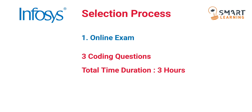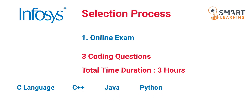In the first round, the allowed programming languages are: first one is C language, second one is C++, third one is Java, fourth one is Python, fifth one is JavaScript. Only these five coding languages will be allowed to code in the first round.